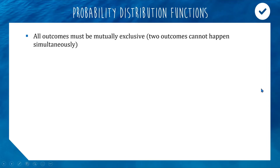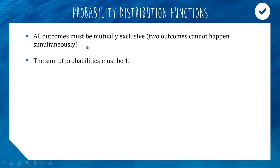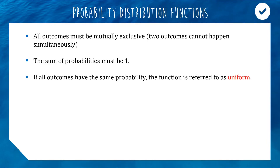A probability distribution function has specific criteria. First, all outcomes must be mutually exclusive — you can't be in two outcomes at once, like rolling a two and a three simultaneously. Second, the sum of all probabilities must equal one, representing a complete sample space. If probabilities don't sum to one, it doesn't qualify as a probability distribution function. Also, if all probabilities are equal — like a dice roll where each outcome has probability 1/6 — the function is called uniform.